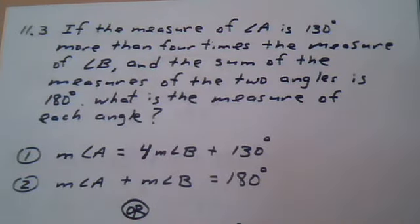If the measure of angle A is 130 degrees more than four times the measure of angle B, and the sum of the measures of the two angles is 180, what is the measure of each angle?